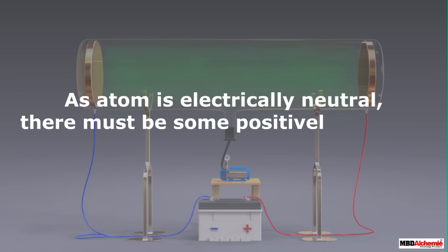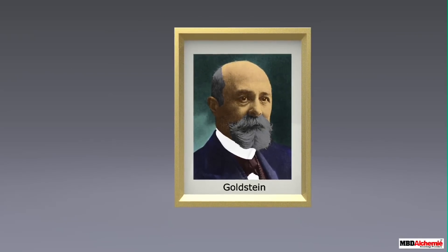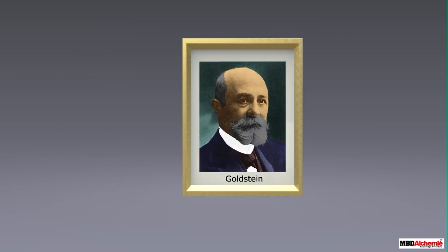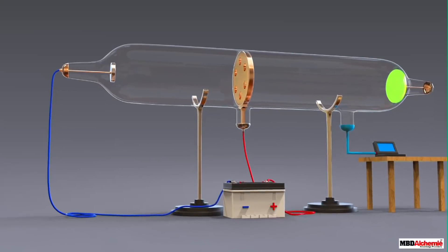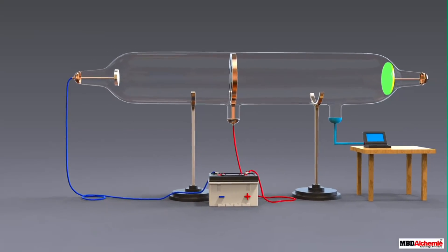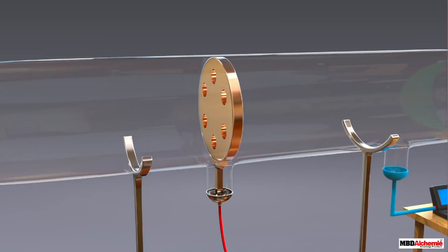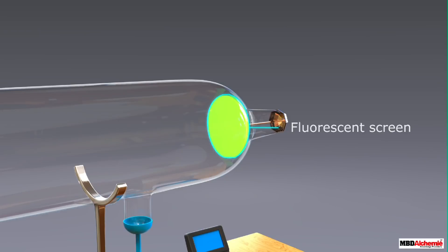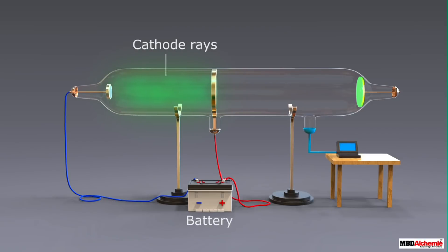So this is how the negatively charged particles were discovered. Since atoms are neutral, it was concluded that some positively charged particles must also be present in the atoms. These positively charged particles were later discovered by Goldstein in 1886 as protons. The experiment setup for the discovery of protons was similar to the cathode ray tube experiment we saw before. The only difference was that Goldstein took perforated cathode in the middle and the fluorescent screen at the other end.